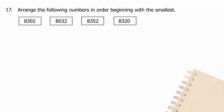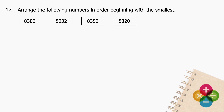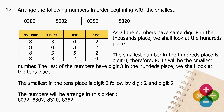Question 17: Arrange the following numbers in order beginning with the smallest: 8302, 8032, 8352, 8320. All numbers have digit 8 in the thousands place, so look at the hundreds place. The smallest hundreds digit is 0, making 8032 the smallest. The remaining numbers all have digit 3 in the hundreds place, so look at the tens place: digits 0, 2, and 5. Order: 8032, 8302, 8320, 8352.